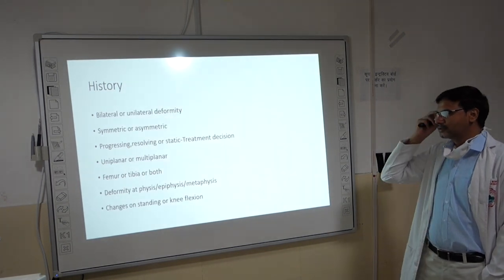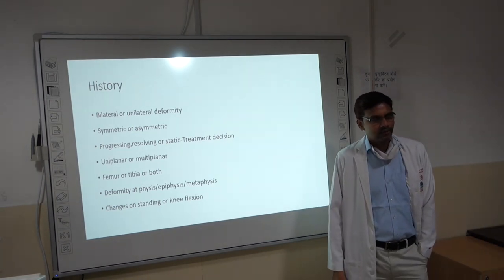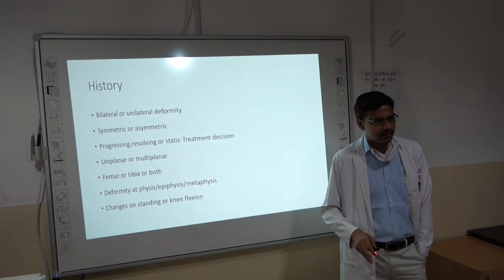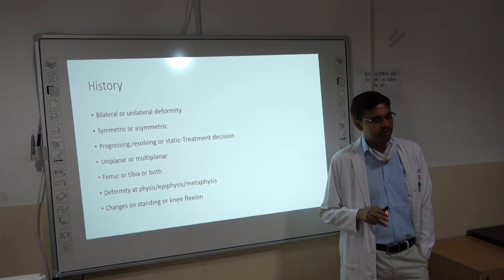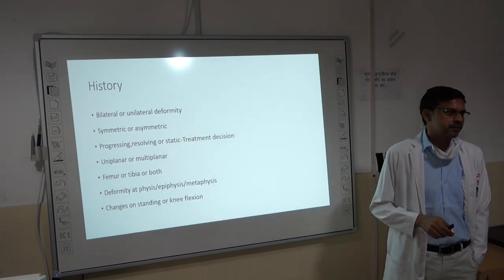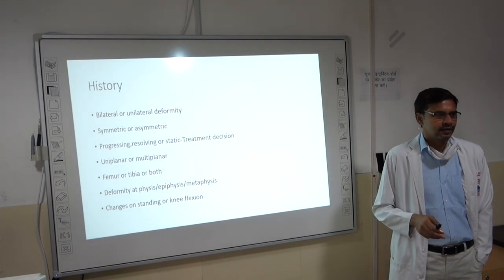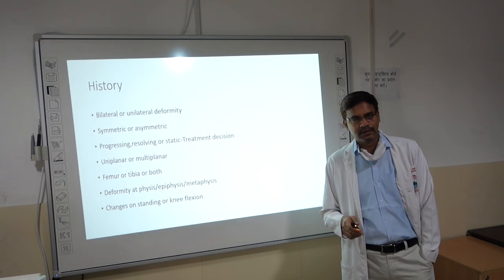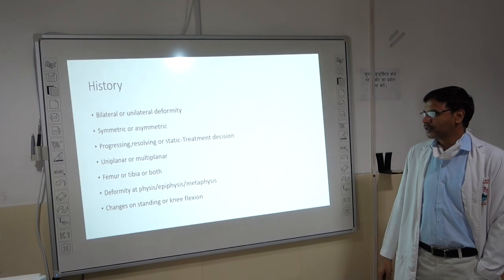The next point is whether the deformity is bilateral or unilateral. Bilateral deformity is more commonly physiological and should resolve spontaneously, while unilateral is always pathological. There are some pathological conditions like skeletal dysplasia — such as Ellis-van Creveld syndrome — where genu valgus is symmetrical and bilateral, and you will have to look for other signs of the syndrome like dental problems and hand abnormalities.